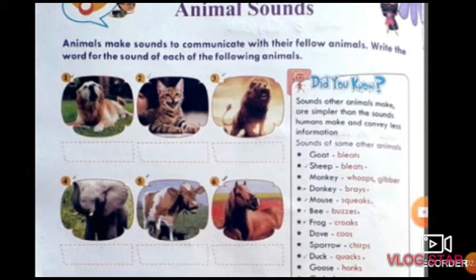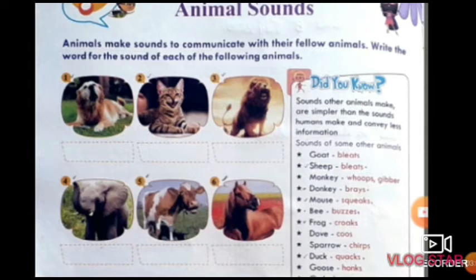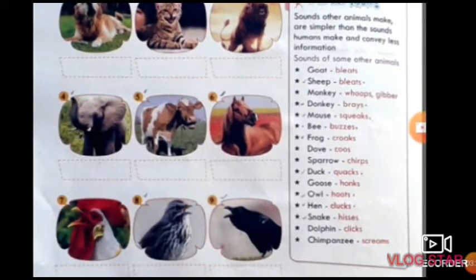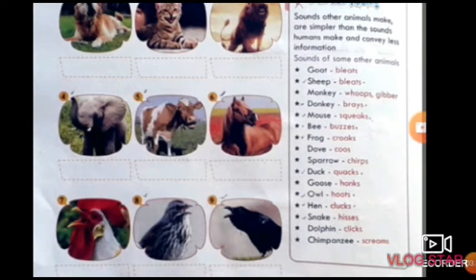Sounds of some other animals: Sheep - baa. Monkey - chatter. Donkey - bray. Frog - croak. Duck - quack. Goose - honk. Hound - bay. Owl - hoot. Hen - cluck. Dolphin - clicks. Chimpanzee - screech.